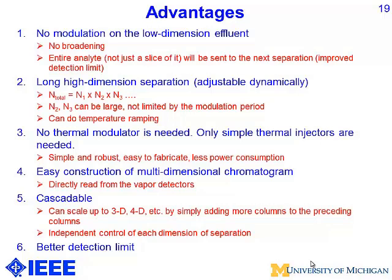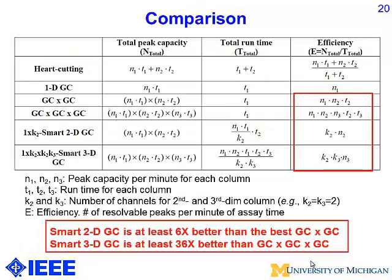Smart 2D GC also has a better detection limit because instead of cutting peaks into small slices, we send entire peaks into second or third dimensional columns. Comparing our approach to traditional GC×GC and GC×GC×GC: smart 2D GC is at least six times better in peak capacity than the best GC×GC, and smart 3D GC is at least 36 times better than GC×GC×GC. Comparing smart 3D GC with current existing 2D GC, we are probably at least 100 times better.